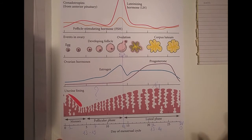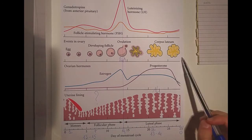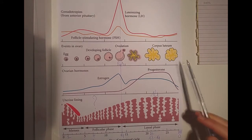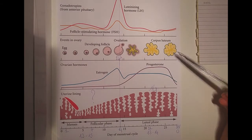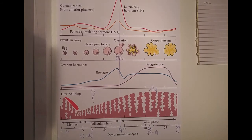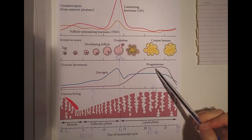If there's no conception, the corpus luteum will live for roughly 14 days and then degenerate, stopping progesterone production. This causes a huge drop in progesterone levels, which makes the endometrium break down and shed — that is your period. What keeps the endometrium intact is the corpus luteum and its progesterone production.